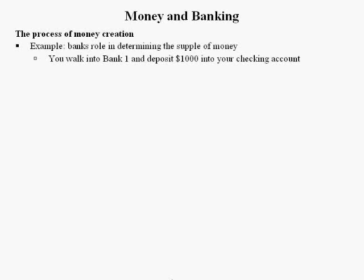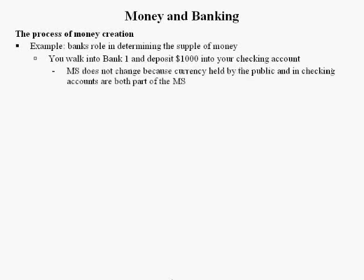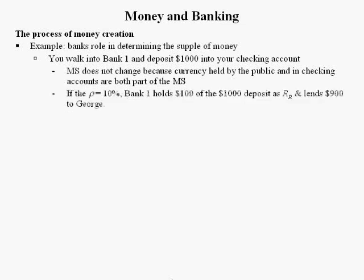As you walk into Bank 1 and deposit $1,000 from your checking account, the money supply doesn't immediately change because currency held by the public and checking accounts are both part of the money supply. However, the Federal Reserve might have set the reserve requirement ratio at 10%, so Bank 1 has to hold $100 by law in its vault.